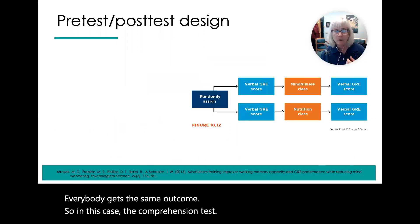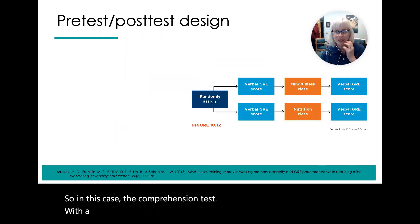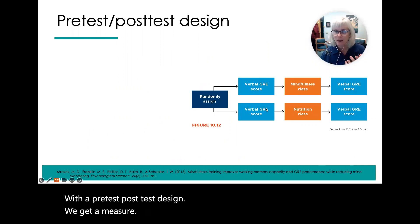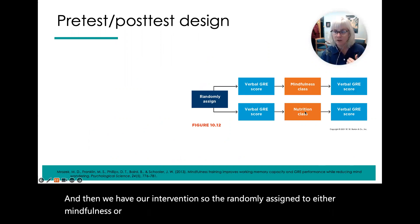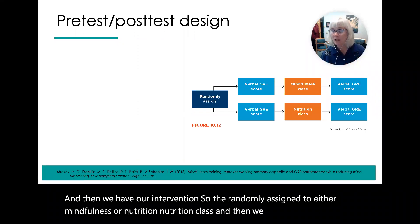With a pre-test/post-test design, we get a baseline measure, and then we have our intervention. Participants are randomly assigned to either a mindfulness or a nutrition class, and then we have our outcome measure.